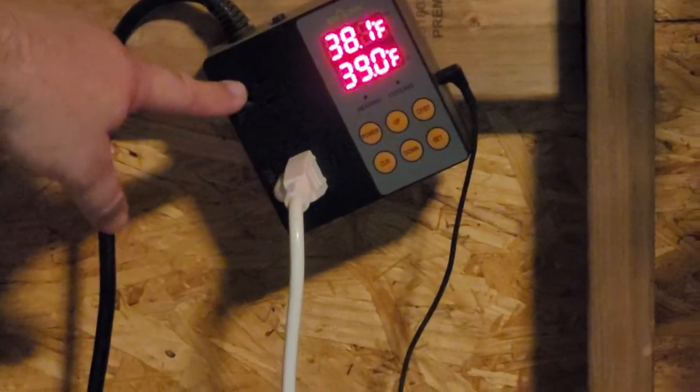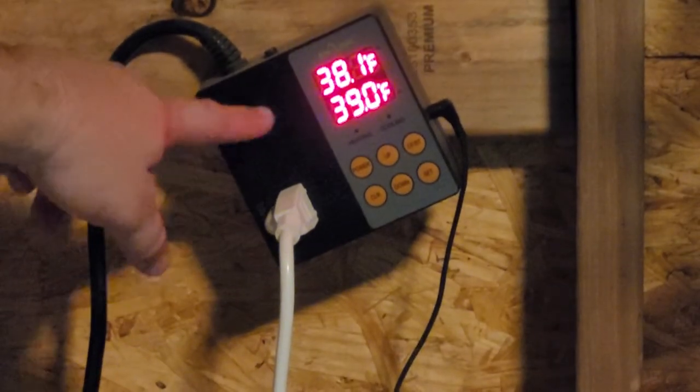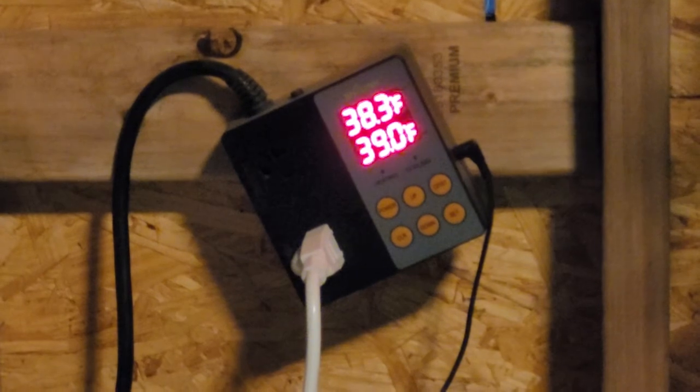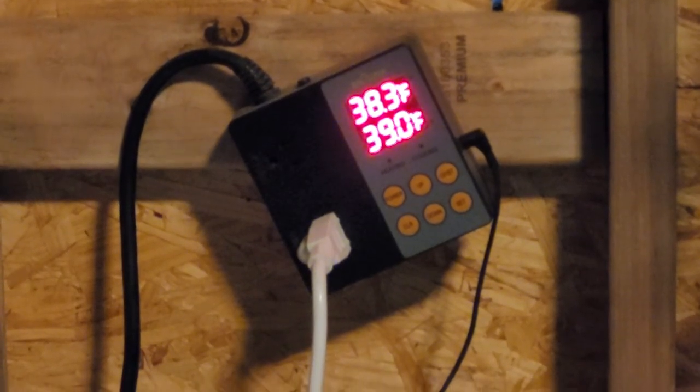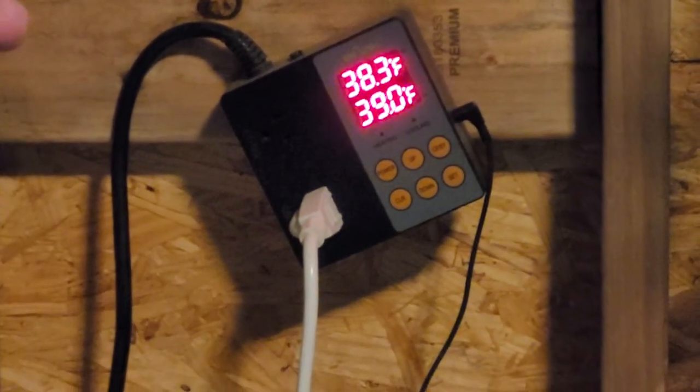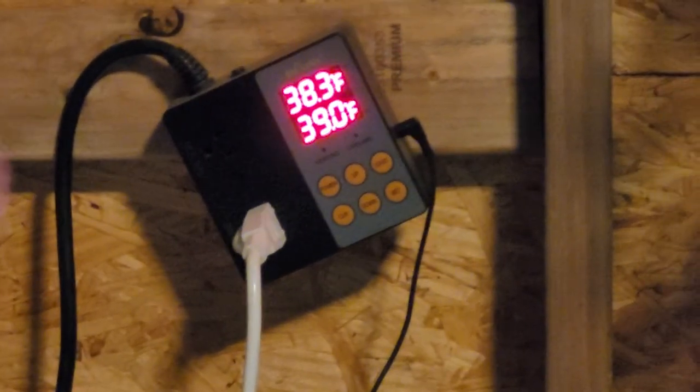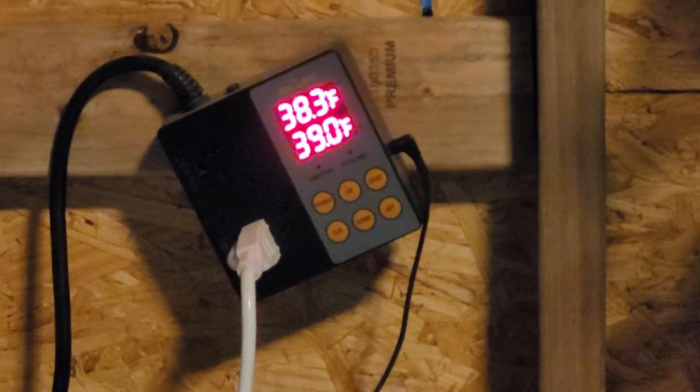Dual range means it has a cold side and a hot side. Obviously we're not using the hot side. It's basically used in agriculture or laboratory settings to heat or cool a specific area and keep it within a very tight range.